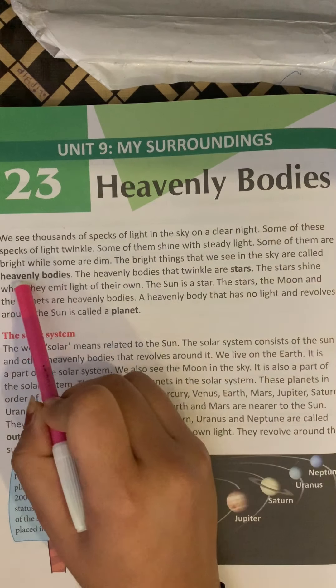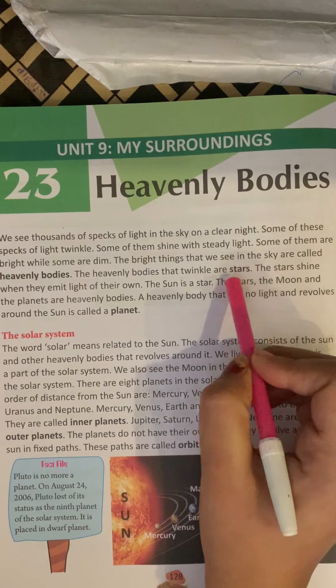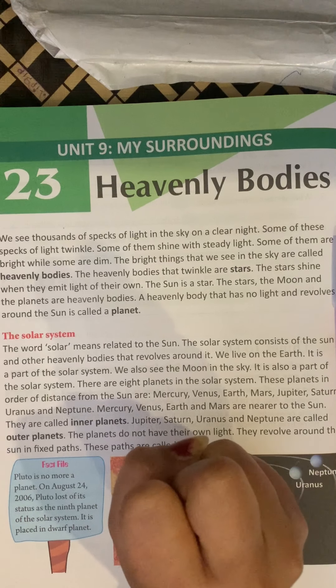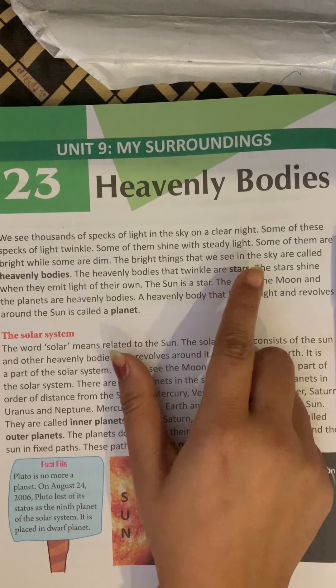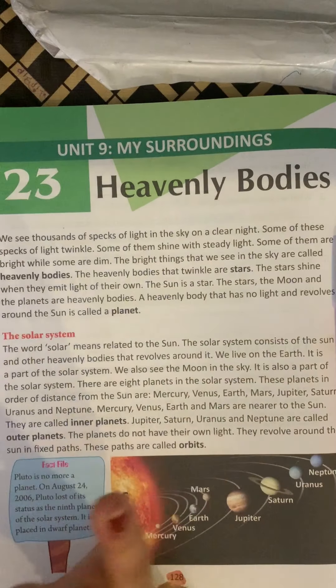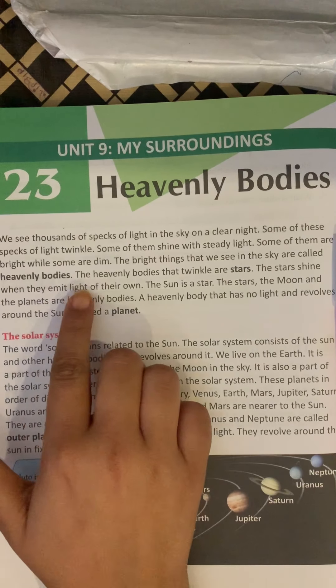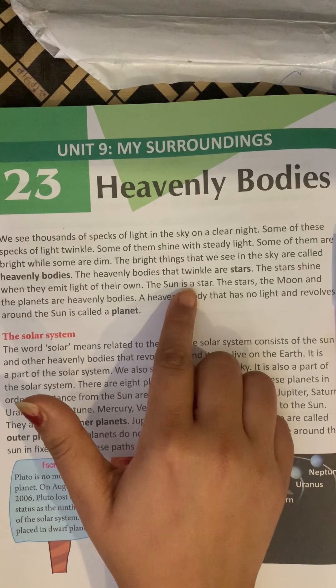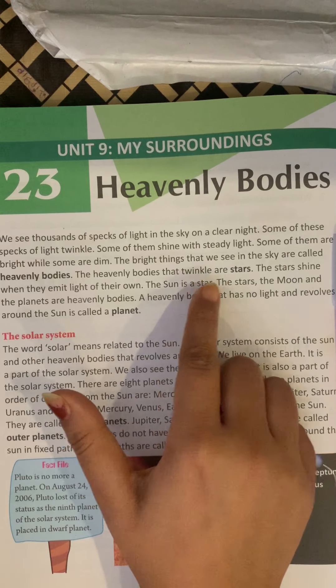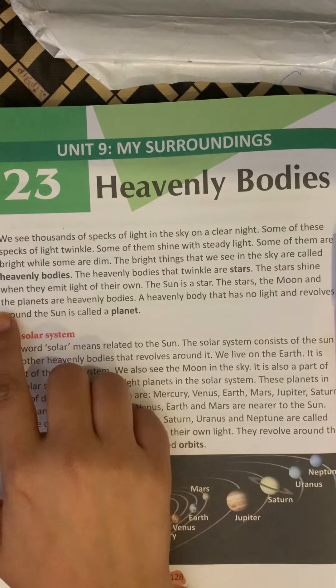The bright things that we see in the sky are Heavenly Bodies. When stars shine, the stars shine when they emit light of their own. What is the sun? Sun is also a star. The stars, the moon and the planets are heavenly bodies.